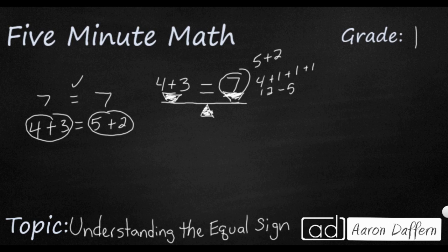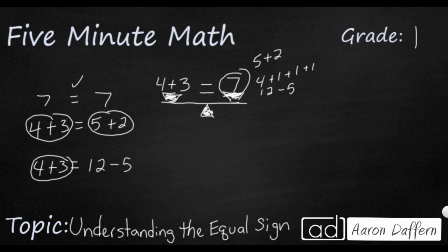Let's try another one: 4 plus 3 equals 12 minus 5. That's kind of strange — I don't know if I've ever seen an addition problem on one side and a subtraction problem on the other side. But let's simplify and see if both sides come out to the same thing. So 4 plus 3, we know that makes 7. And 12 take away 5 — let's just double check: 1, 2, 3, 4, 5...